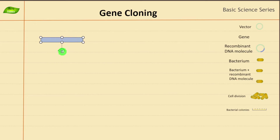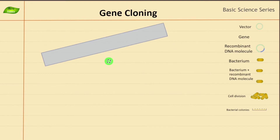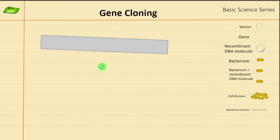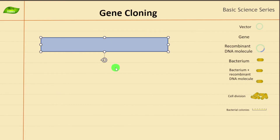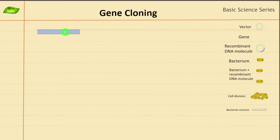Our objective is to take the gene and insert it into a vector. Vector selection is one of the important concepts here. We'll also discuss what a vector and a plasmid molecule are. The gene can be just a stretch of DNA molecule — that is our gene — and we'll move to step one, which is isolating this gene.